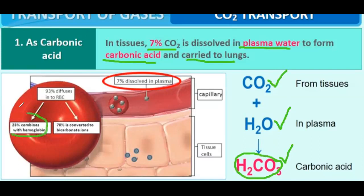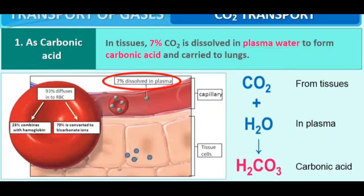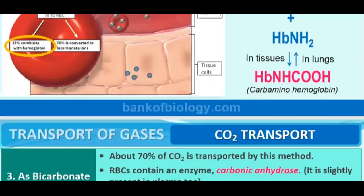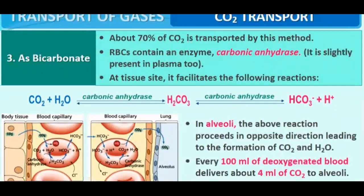About 70% of CO2 is converted into bicarbonate ions — this is the major method of carbon dioxide transport. RBCs contain an enzyme called carbonic anhydrase. At the tissue site, it facilitates the reaction: CO2 + H2O → carbonic acid → bicarbonate ions + H+ ions. About 70% of carbon dioxide is transported in this way.